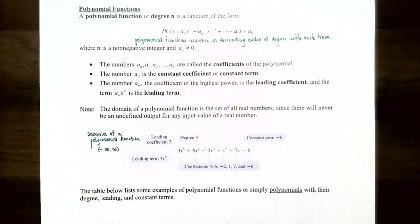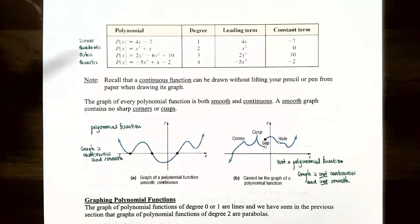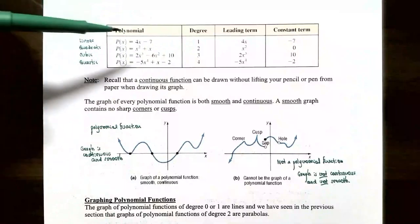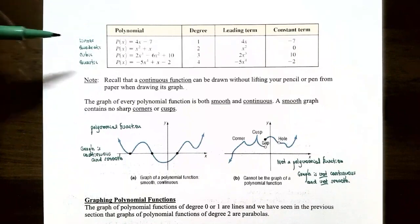The following table lists examples of polynomial functions we've seen already — also called polynomials for short — comparing their degree, leading term, and constant term. For p(x) equals 4x minus 7, the highest power is 1, so the degree is 1, the leading term is 4x, and the constant term is negative 7. This is called a linear function — a special type of polynomial function where the degree is 1.